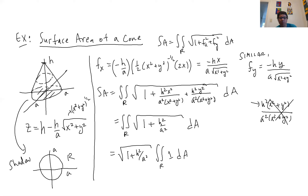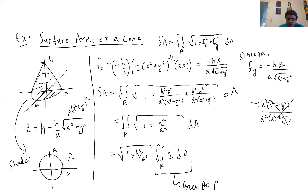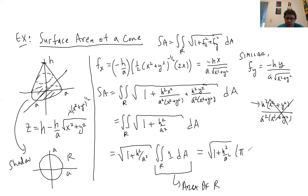I can factor out √(1 + h²/a²) entirely from the double integral, leaving ∬ 1 dA, which is just the area of the region R — and R is a circle of radius a. So the area is πa². Therefore the surface area equals √(1 + h²/a²) · πa².